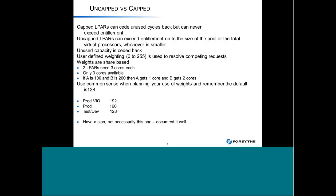Setting a weight doesn't mean a higher-weighted LPAR always wins — it means it gets a larger percentage of what's available when there isn't enough for everyone. If both LPARs are asking for two cores and four are available, both get two. But if there are only two available, they split based on weights. The moral is to have a plan: structure out who your most important LPARs are, document it, and make sure no production LPAR is set at 128 or below. If a test LPAR is brought up at 128, it's now competing for the same resource at the same priority.